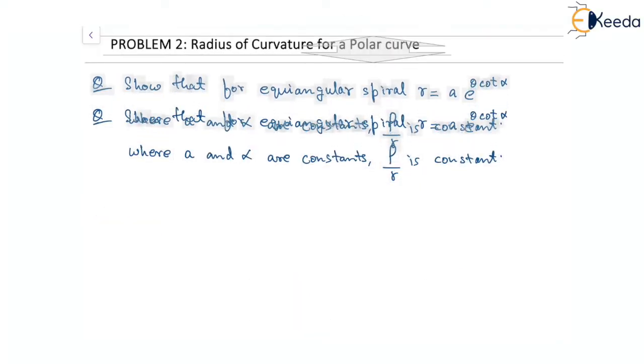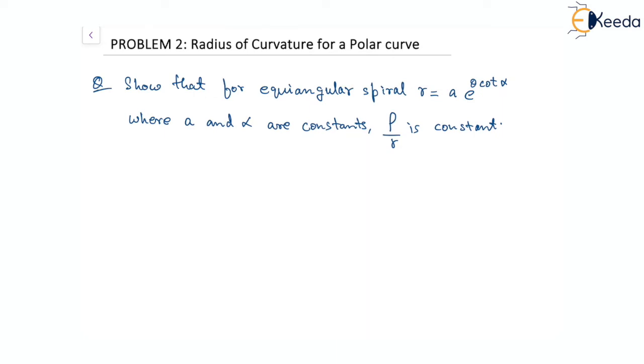The question is: show that for the equiangular spiral r equals a times e to the power of theta cot alpha, where both a and alpha are constants, rho by r is going to be a constant.